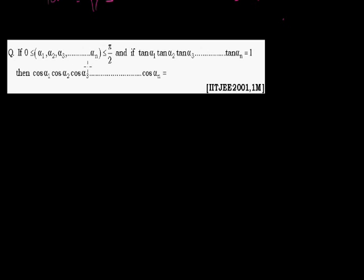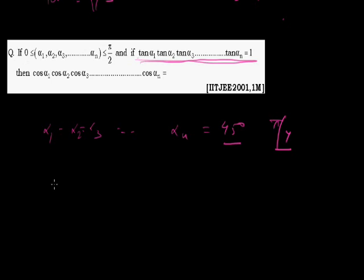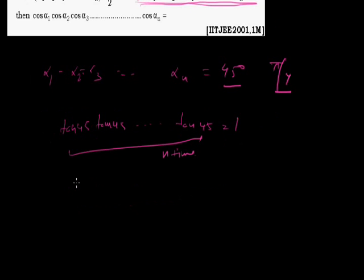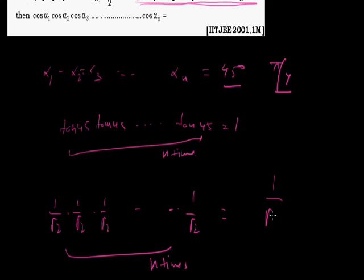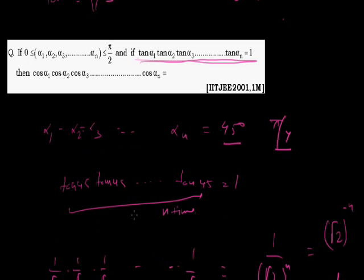The last problem: let α₁ = α₂ = α₃ = ... = αₙ = 45°. The condition is satisfied since tan 45° × tan 45° × ... = 1. Now cos α₁ × cos α₂ × cos α₃ × ... × cos αₙ = (1/√2) × (1/√2) × ... n times = (1/√2)ⁿ = 2^(−n/2), which is the same as √2 to the power minus n. Hence the answer is 2^(−n). This completes the session — thank you very much.